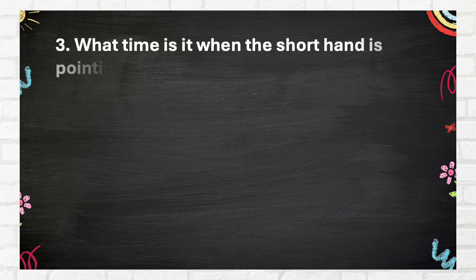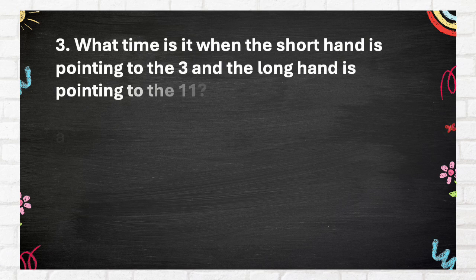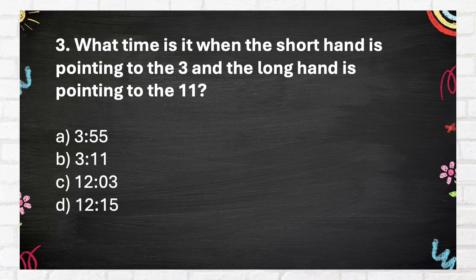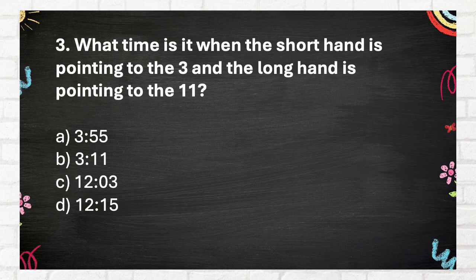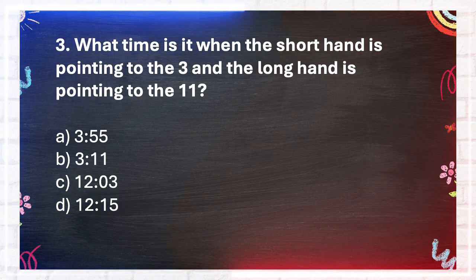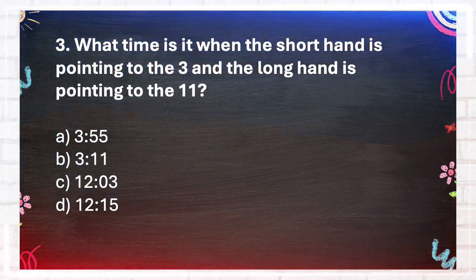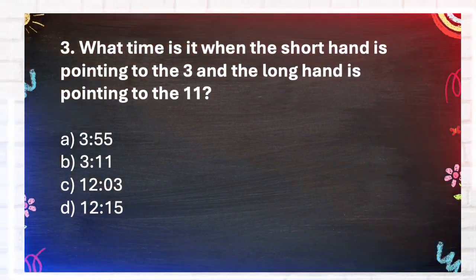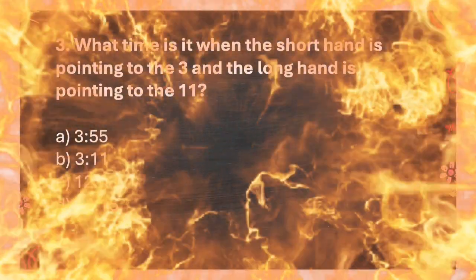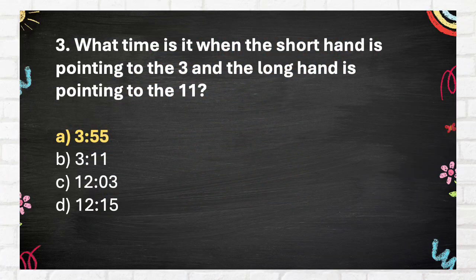Question number 3. What time is it when the shorthand is pointing to the 3 and the longhand is pointing to the 11? A 3:55, B 3:11, C 12:03, D 12:15. The answer is A, 3:55.